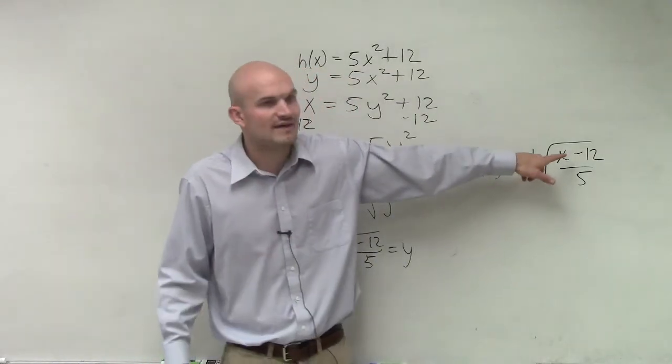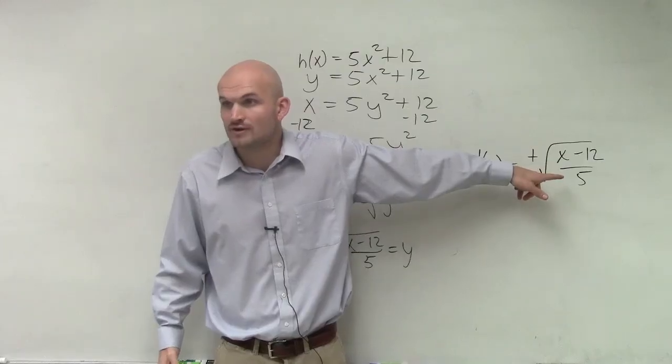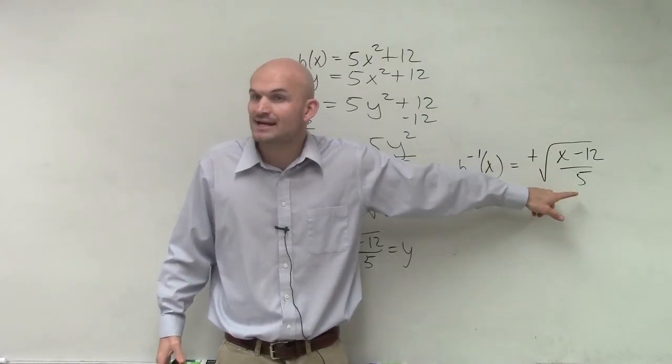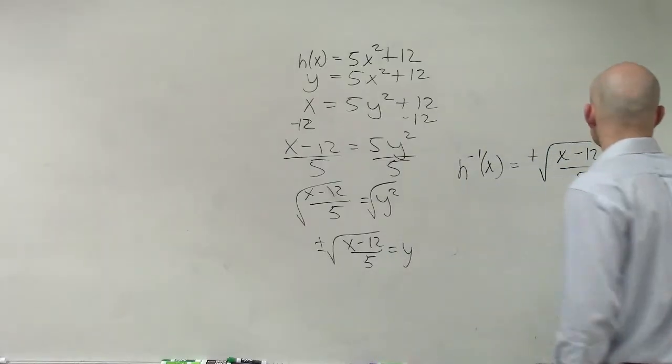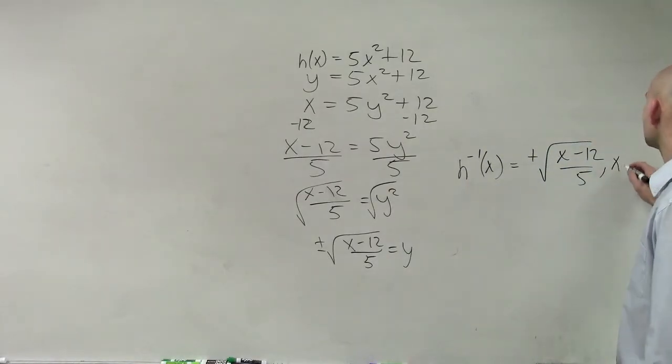Because I know that all values of x that are less than 12 are going to make my radicand negative. So therefore, I'm going to put a constraint where x has to be greater than or equal to 12.